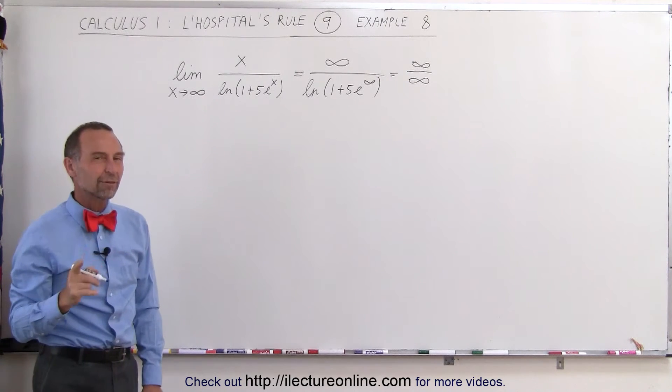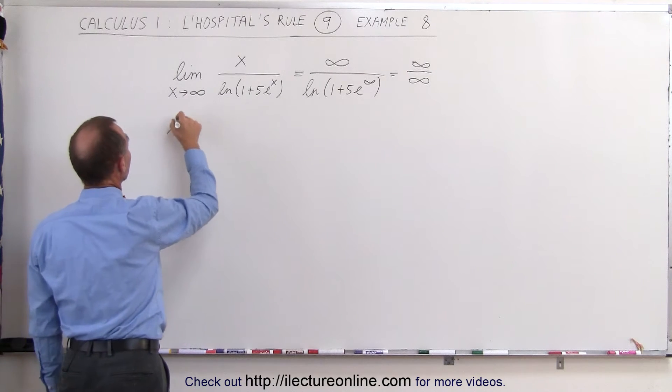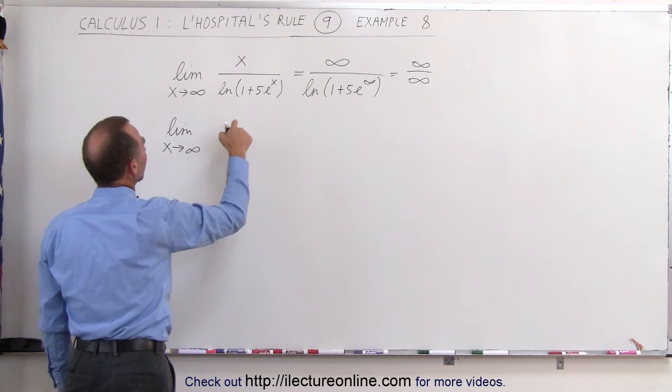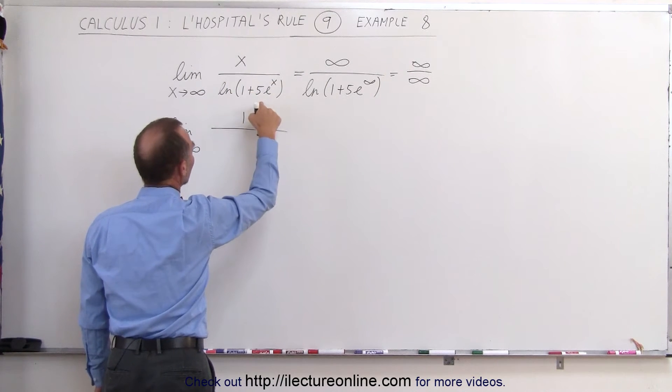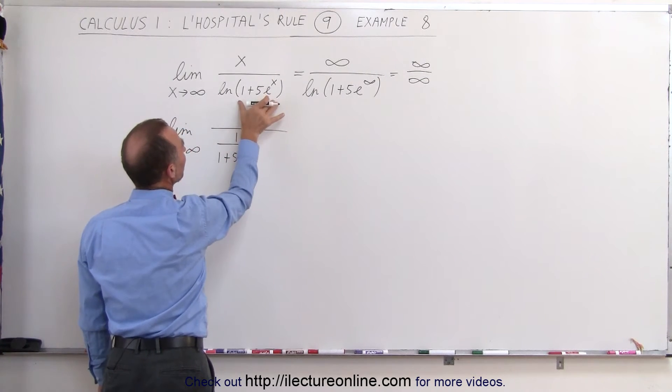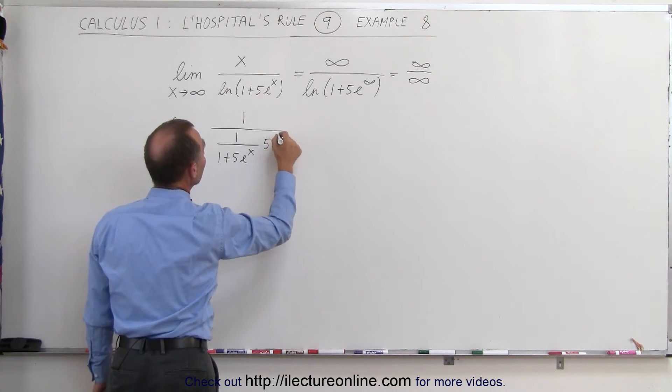Let's take the derivative of the numerator and the derivative of the denominator and see what we get. We take the limit as x approaches infinity. The derivative of x, that's 1. The derivative of the natural log of this function is 1 over the function, 1 plus 5e to the x, times the derivative of the function, and that would be 5e to the x.